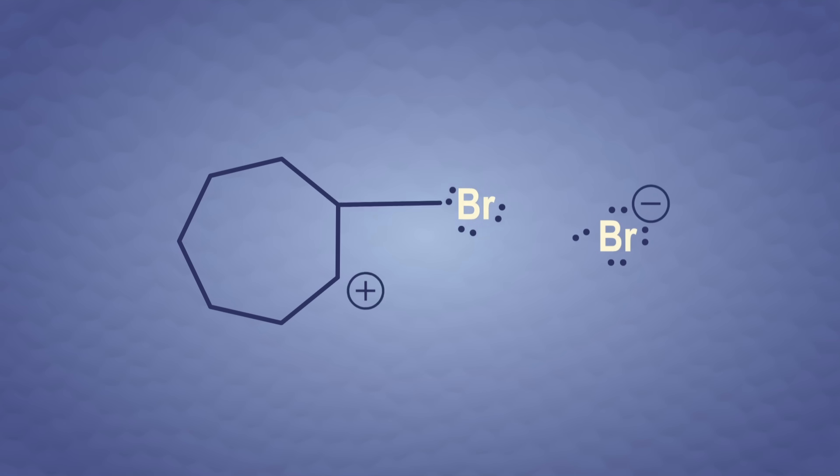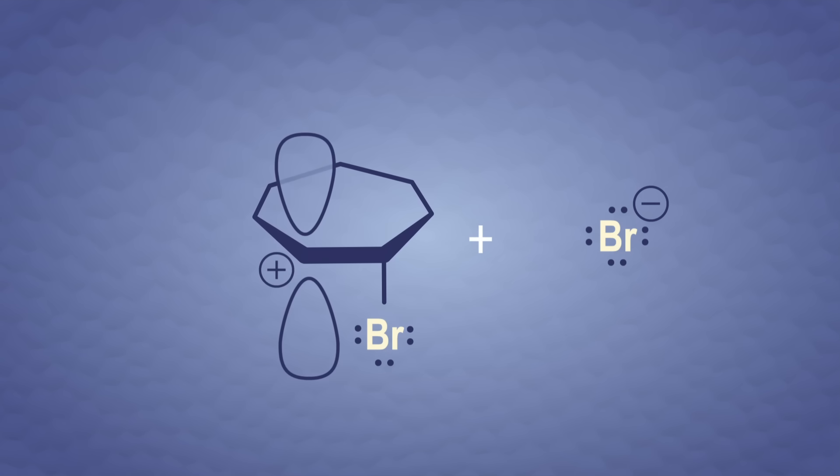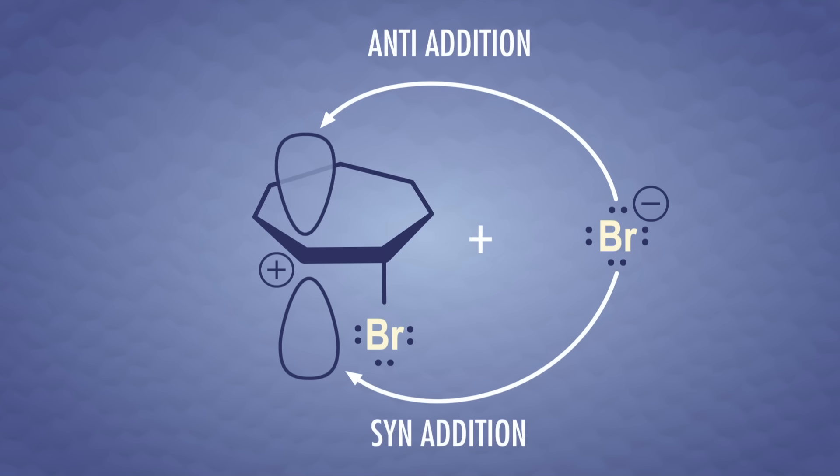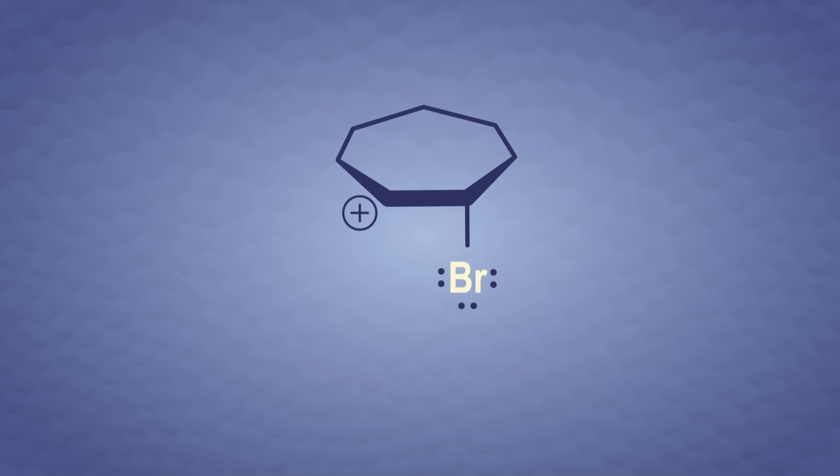The alkene pushes off Br- and forms a cation. But here's a possible dilemma. Thinking about stereochemistry, the bromide ion could attack a planar carbocation on either face of the ring. That would give us a mixture of syn and anti-addition. But experimentally, that doesn't happen here. We only get the anti-product. So there's something tricky going on that prevents the syn-addition.